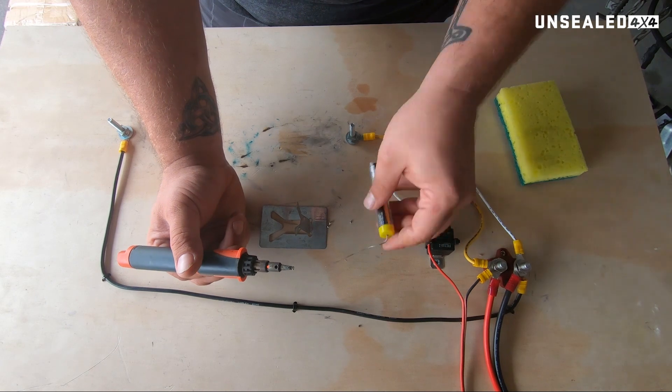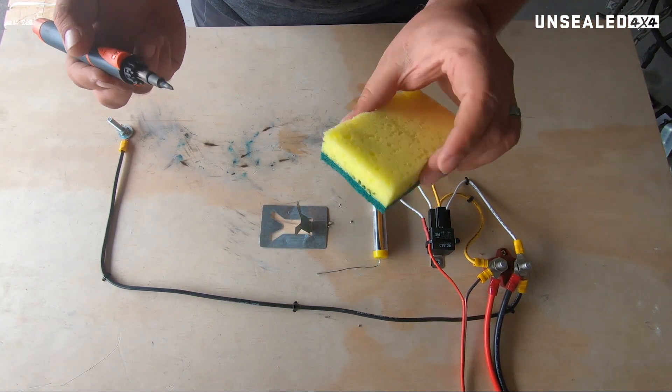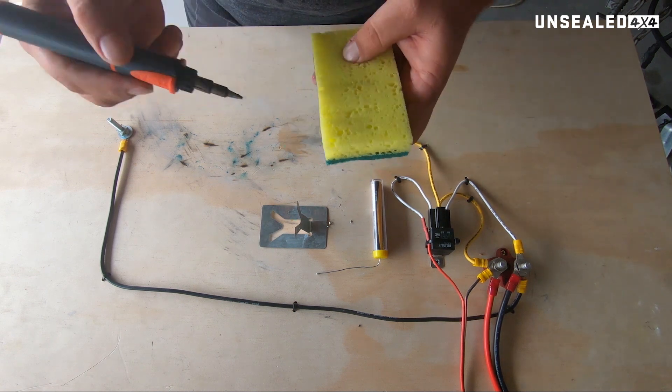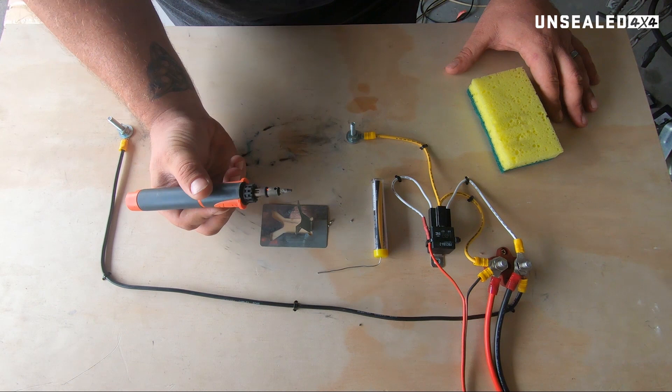There's really not much else to soldering iron besides that. Like I said, keep your tip nice and clean. Try not to use a new one, the wife will shoot you, or the husband. But yeah, that's our soldering iron.